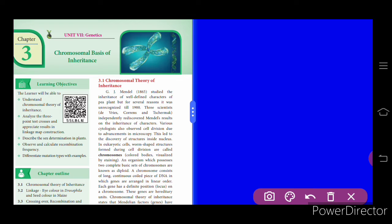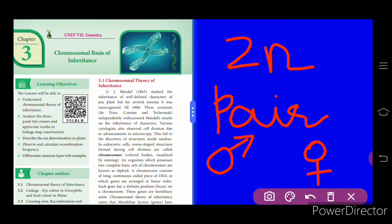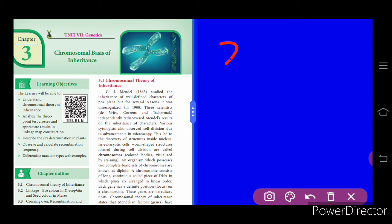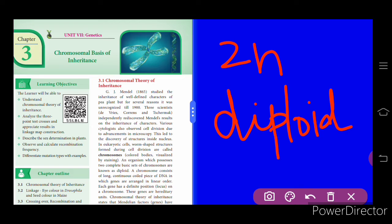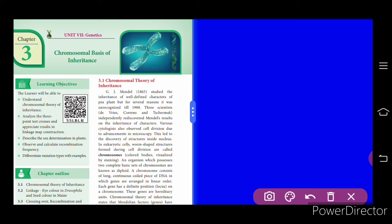Generally an organism possesses two n number of chromosomes, or a pair. One chromosome is received from the paternal side and the other from the maternal side, making it two n. This two n condition is called diploid, and one n is called haploid. So you have understood what inheritance is, the three scientists who rediscovered Mendel's work, what a chromosome is, and the haploid and diploid conditions.